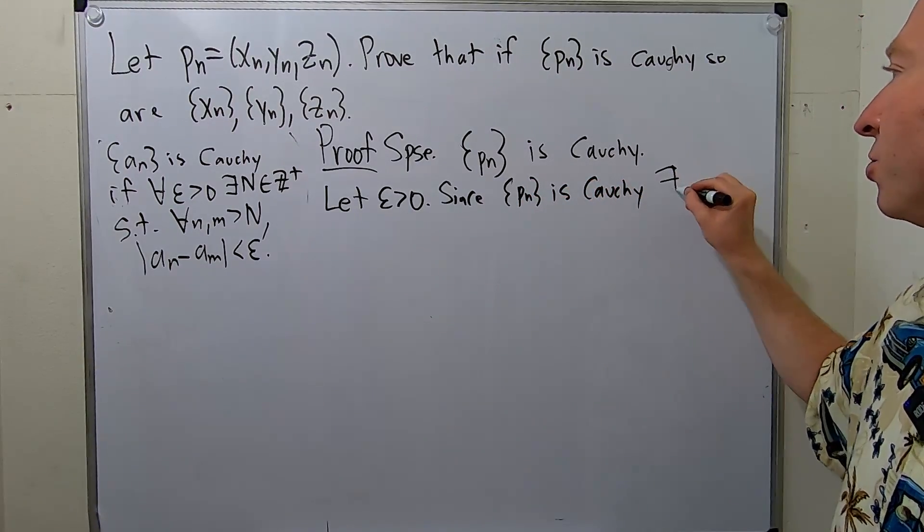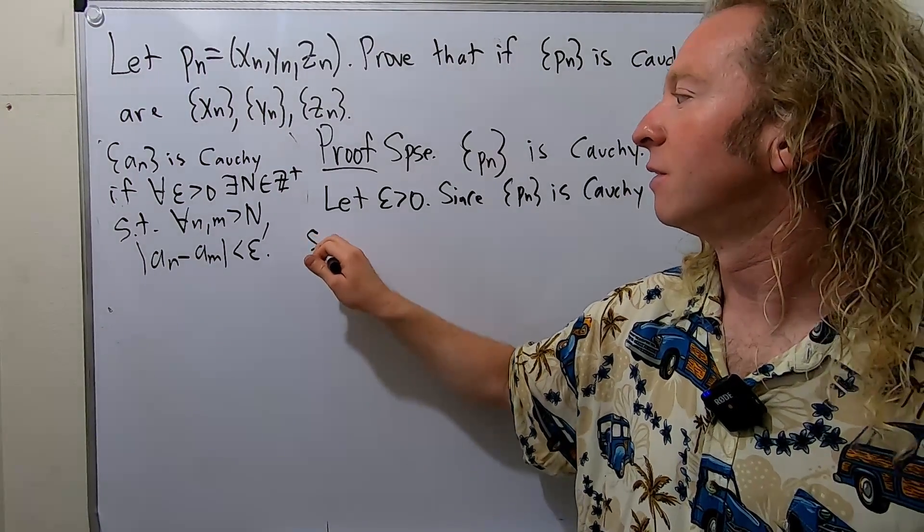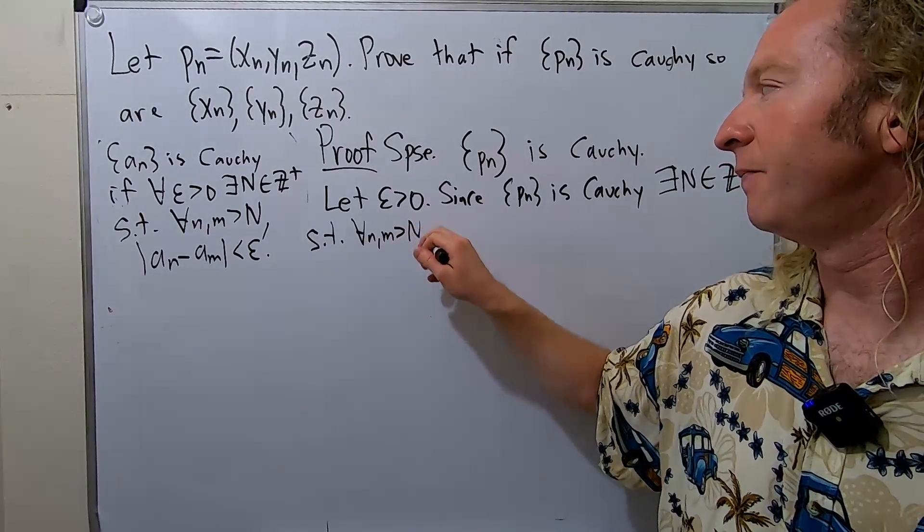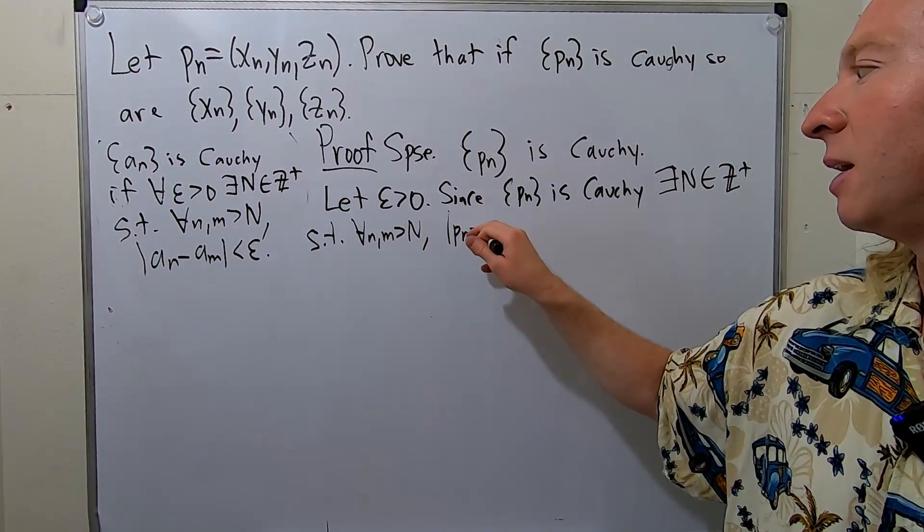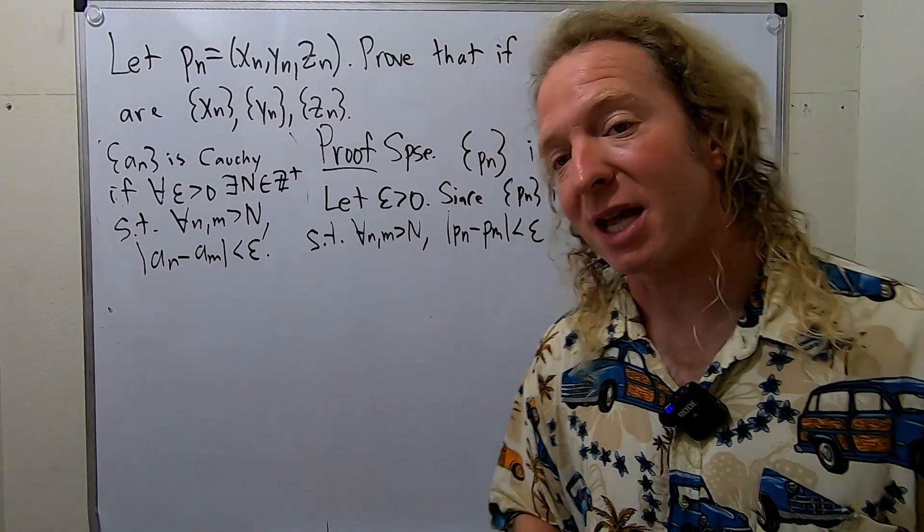This means there exists a natural number or a positive integer N such that for all little n and little m bigger than capital N, the distance between Pn and Pm can be made arbitrarily small. In other words, you can make it less than epsilon.